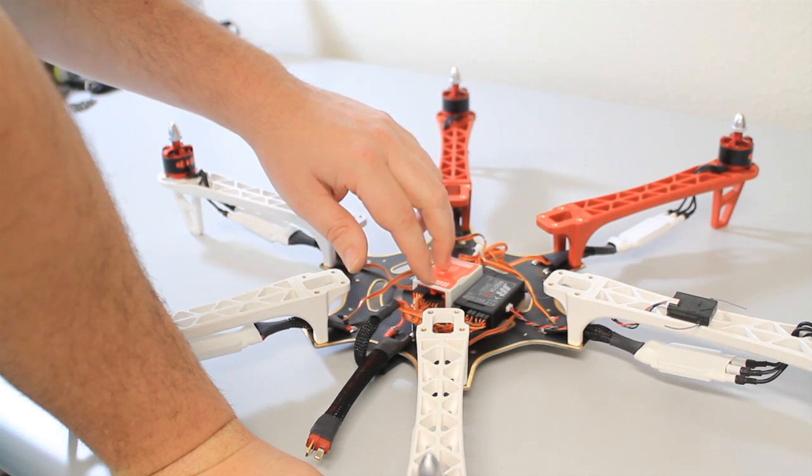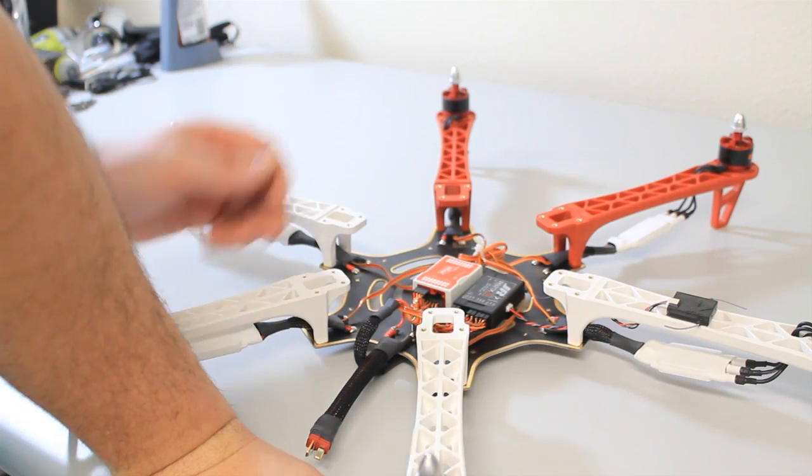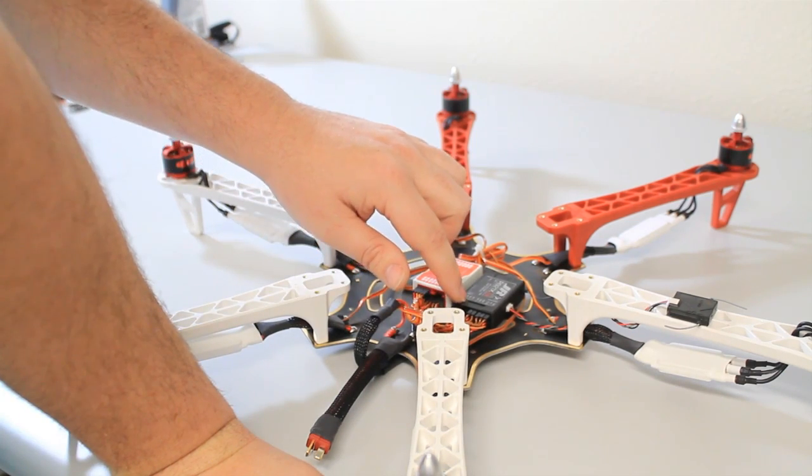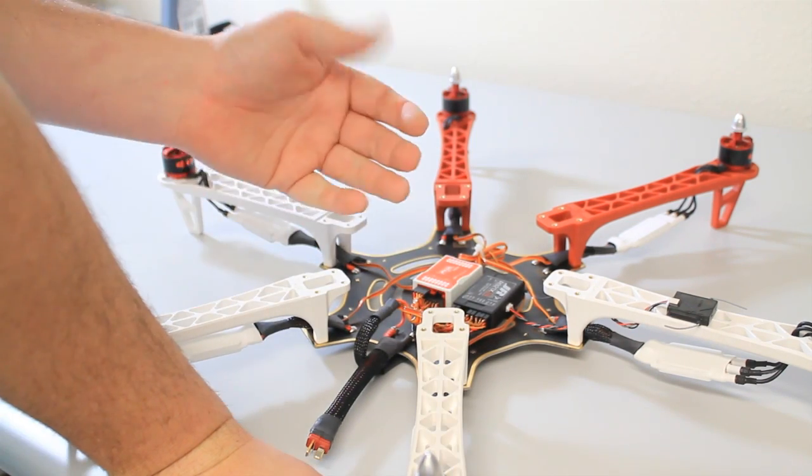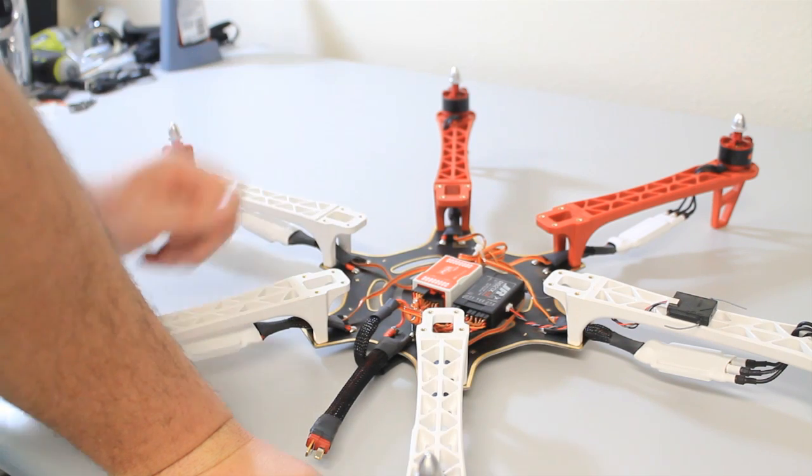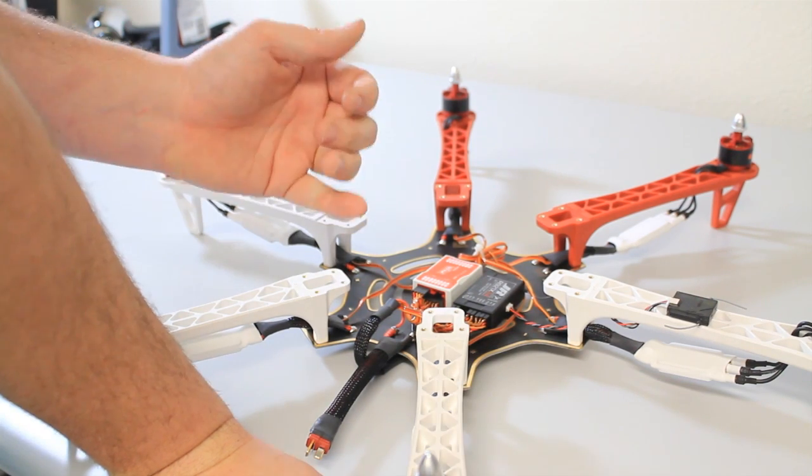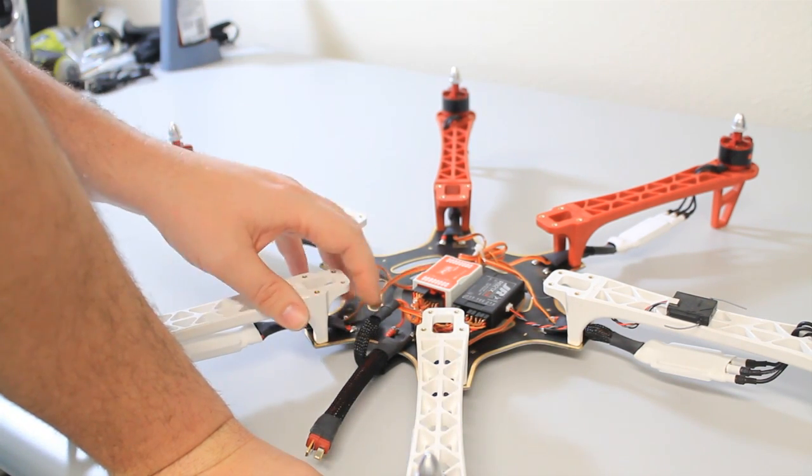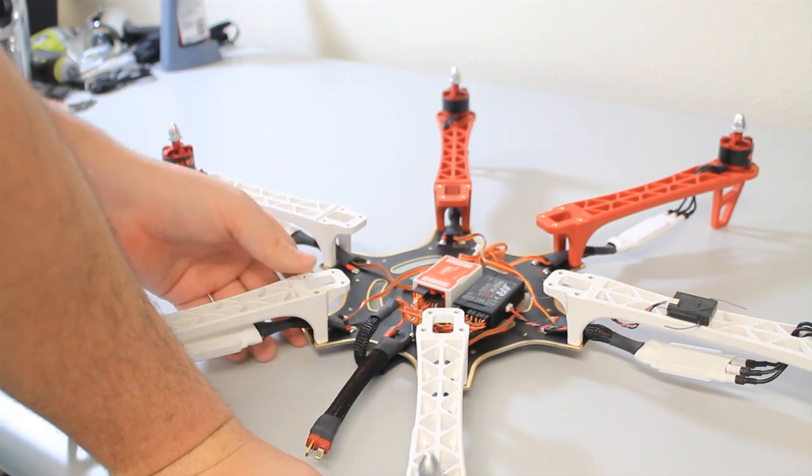Then for X1 and X2, I use that on my auxiliary three and auxiliary four for the slider switch on my JR11X. That way it can control the gains for both atti mode and for a normal GPS mode.